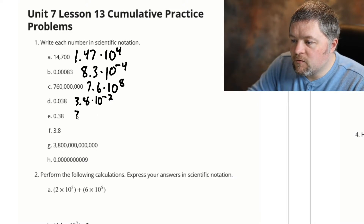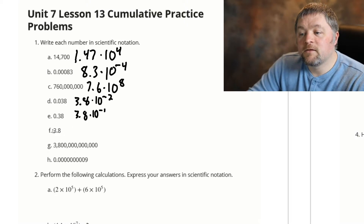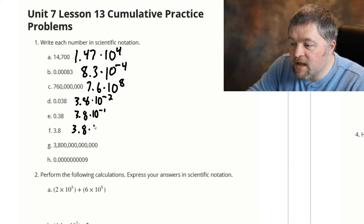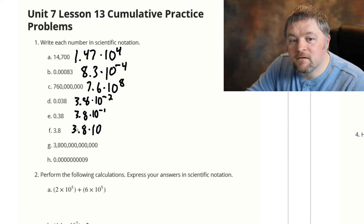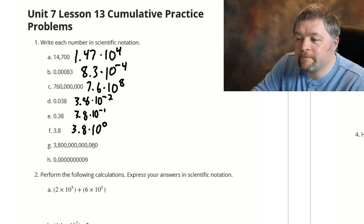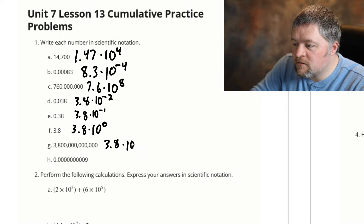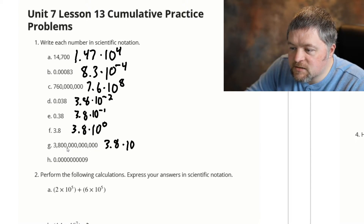0.38 will be 3.8 times 10 to the negative — how many spots did we move it? Just one. 3.8 — we will again have 3.8 in scientific notation. We do need a power of ten. How many spots do we have to move the decimal point here? None. What number is none? Zero. We move that decimal point zero spots. 3.8 yet again, times 10 to the power of — how many spots are we moving this decimal point? Three, six, nine, twelve.